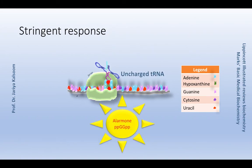Regulation in response to amino acid starvation is called the stringent response. The binding of an uncharged transfer RNA to the A site of a ribosome leads to the formation of the alarmone guanosine tetraphosphate, ppGpp. This is catalyzed by stringent factor RelA, which is an enzyme associated with ribosomes. Elevated levels of this alarmone result in inhibition of ribosomal RNA synthesis, transfer RNA synthesis, and some messenger RNA synthesis. However, the messenger RNA for amino acid biosynthesis is not inhibited. ppGpp binds RNA polymerase and alters promoter selection through different sigma factors.